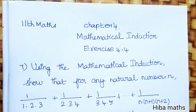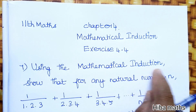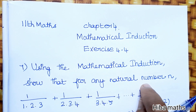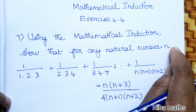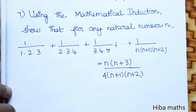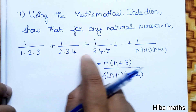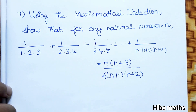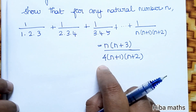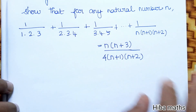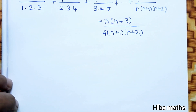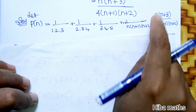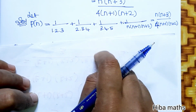Hello students, welcome to Hiba Max 11th standard, Chapter 4 Mathematical Induction, Exercise 4.4, 7th question. Using mathematical induction, show that for any natural number n, where n is greater than or equal to 1: 1/(1·2·3) + 1/(2·3·4) + 1/(3·4·5) + ... + 1/(n·(n+1)·(n+2)) = n(n+3) / [4·(n+1)·(n+2)]. Let P(n) be this statement.